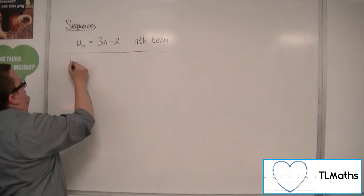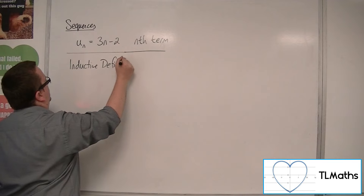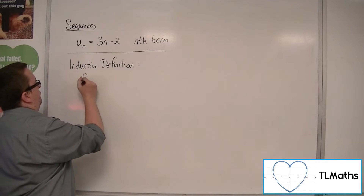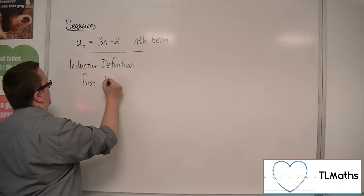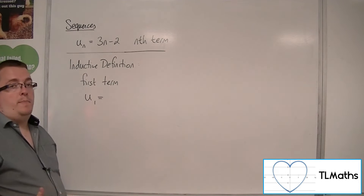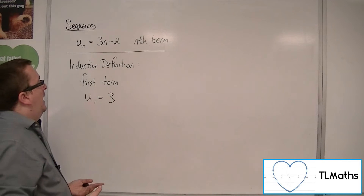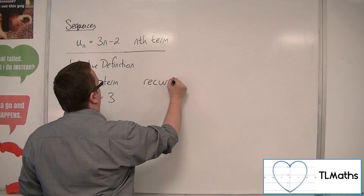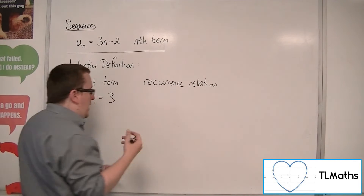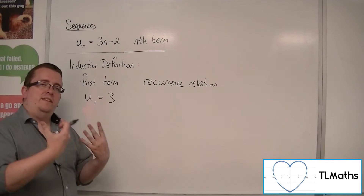An inductive definition has two pieces. First, a first term, which we will say is u1, which might be equal to 3, for example. And second, a recurrence relation. The recurrence relation is an instruction and tells you how to get to the next term.